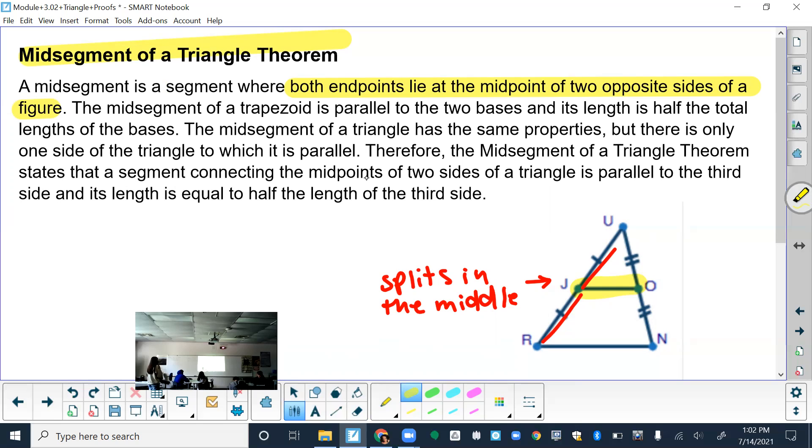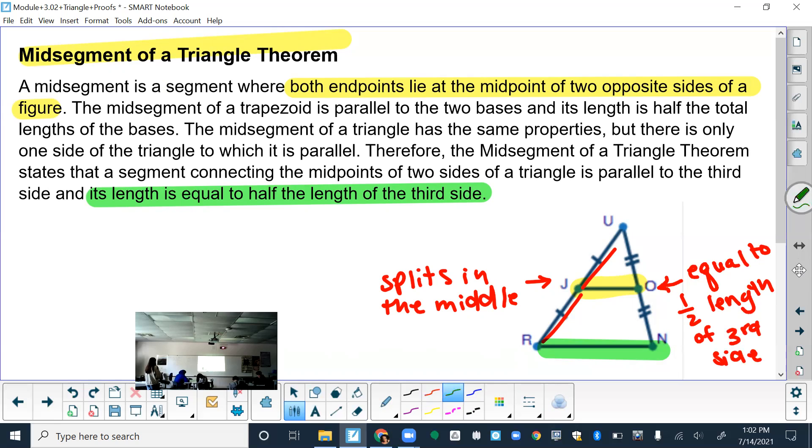And one more thing about that that is important. The midsegment is parallel to the third side. So this is my third side. And its length is equal to half the length of the third side. So the length of this right here, the midsegment, is equal to half the length of the third side. That's an important piece of information. You'll need that piece of information later. Any questions?